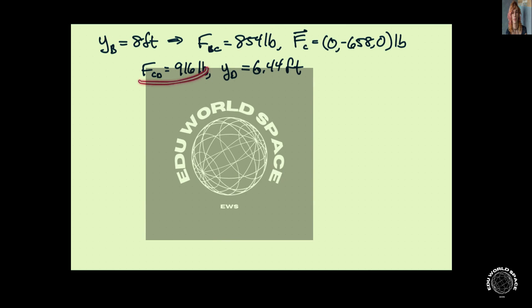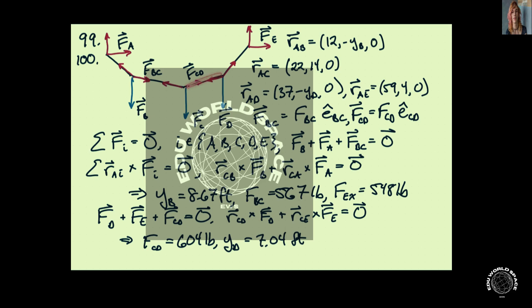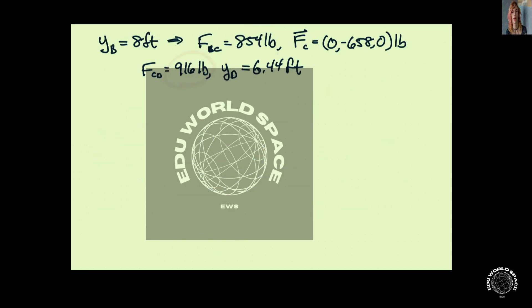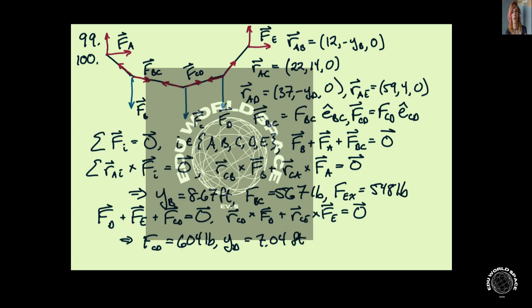Likewise, we can figure out the tension in this cable here. The cable from C to D is 916 pounds, and YD is 6.44 feet. In the previous case, it was 7.04 feet. So again, it has moved up, and that is because as we add more weight here, we're going to have more straight segments. And so the angles at point B and point D will be smaller.